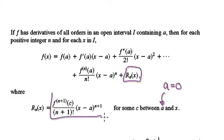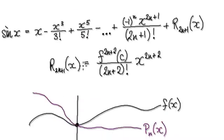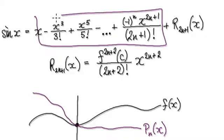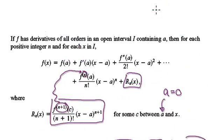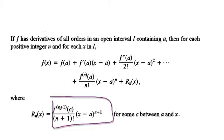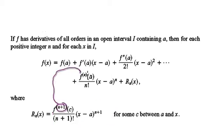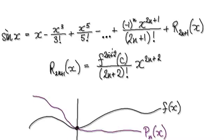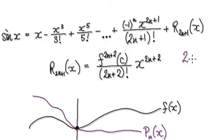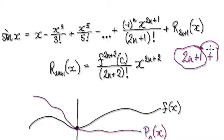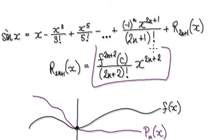So remember, the remainder will be the next derivative to this thing here. Going back to our series here, the remainder will be the next derivative to this last term. So this last term here is 2n plus 1, and then it will be the next one, so it will be at 2n plus 2. These two added together give you this. So the remainder will be given by this.